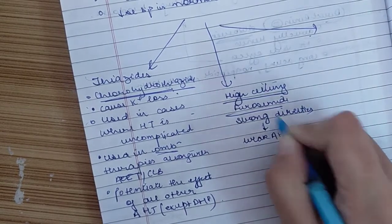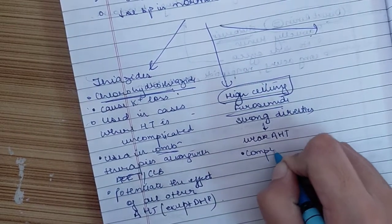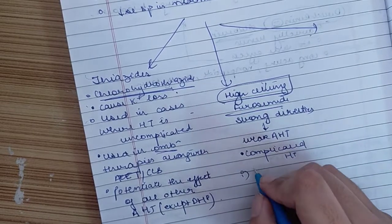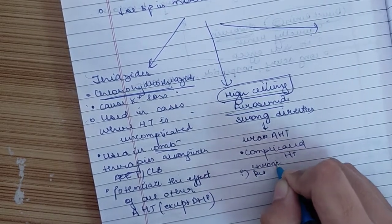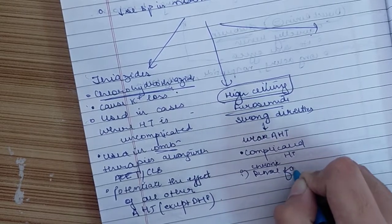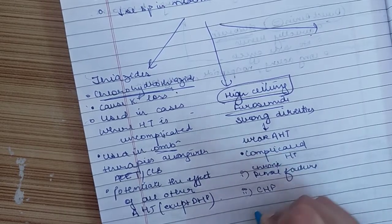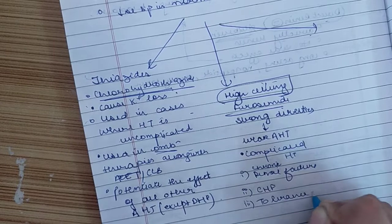In the high ceiling diuretics, it is mainly prescribed in complicated hypertension. Suppose the person has chronic renal failure or is associated with congestive heart failure, or in cases where tolerance has been developed.